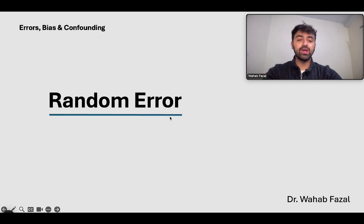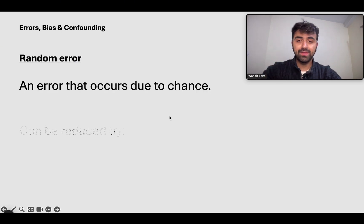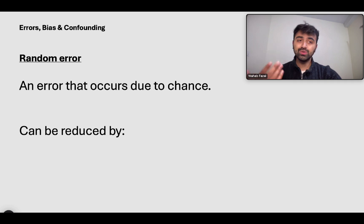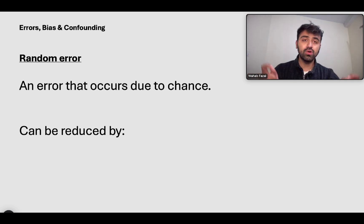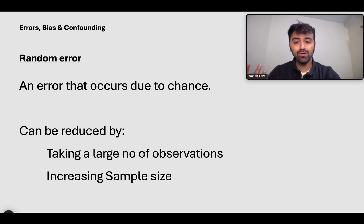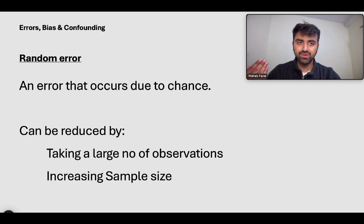The first thing we're going to talk about today is random error. What is random error? It is totally an error that occurs due to chance. Every time you do a measurement, there is a certain amount of error that can be present in that measurement. How do you reduce it? You take a large number of observations and then you increase the sample size of your study.